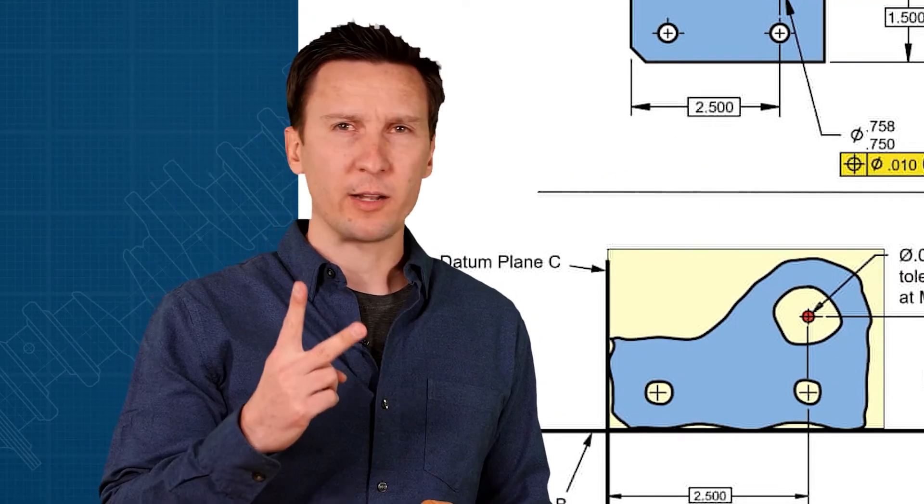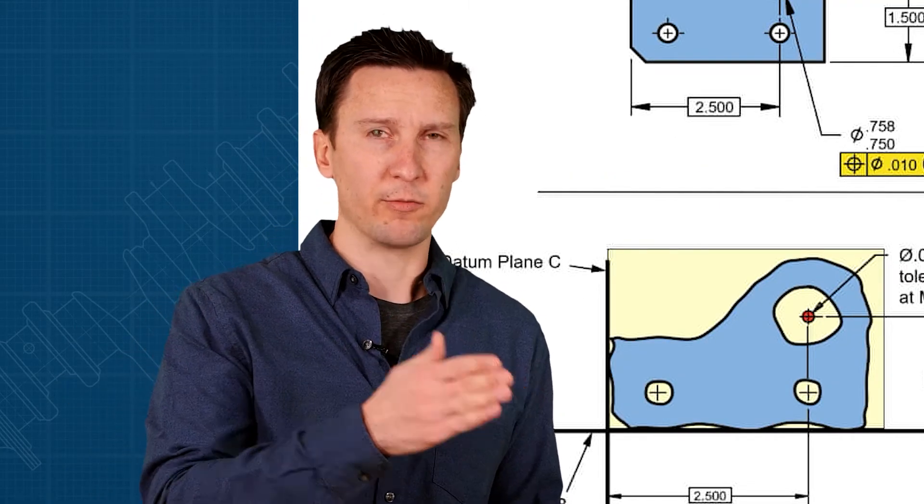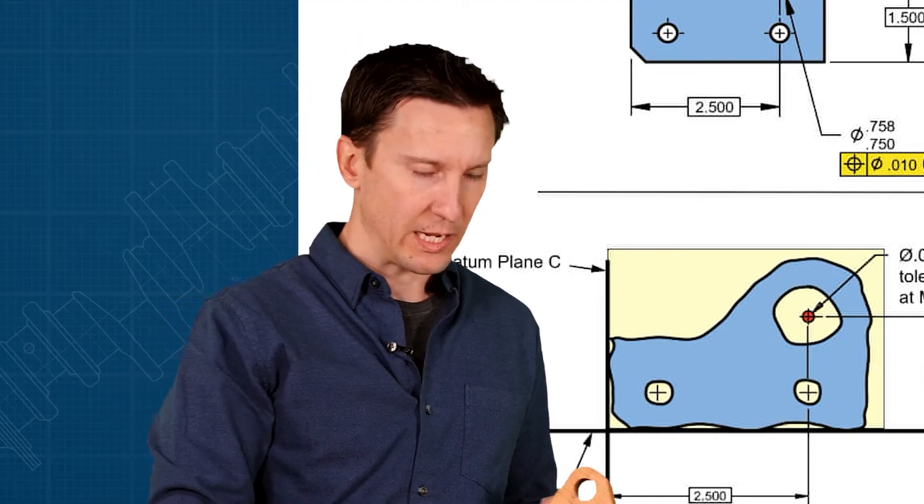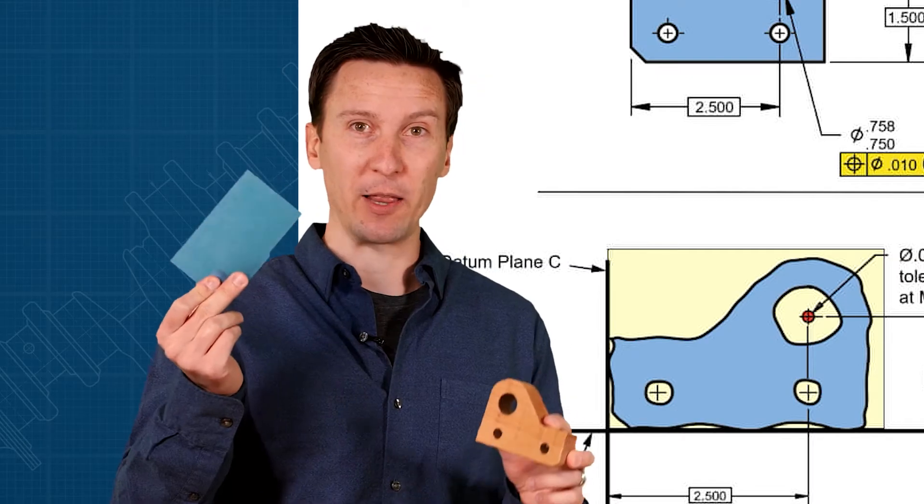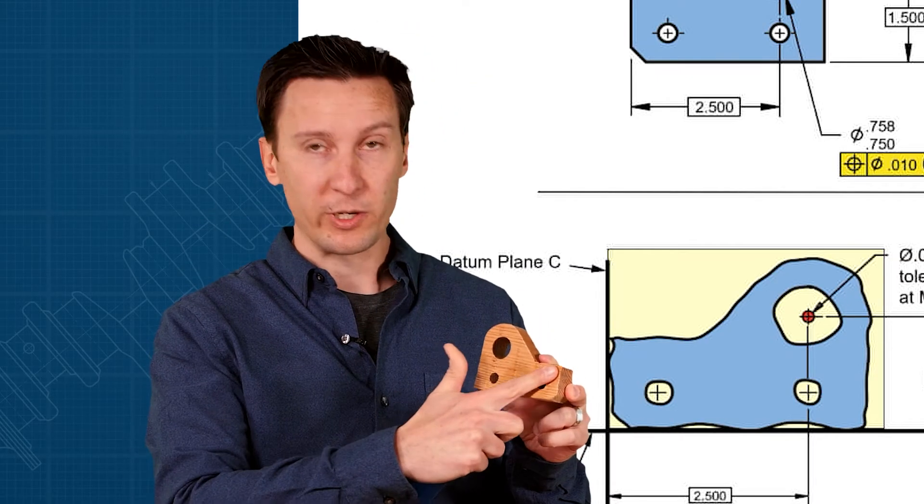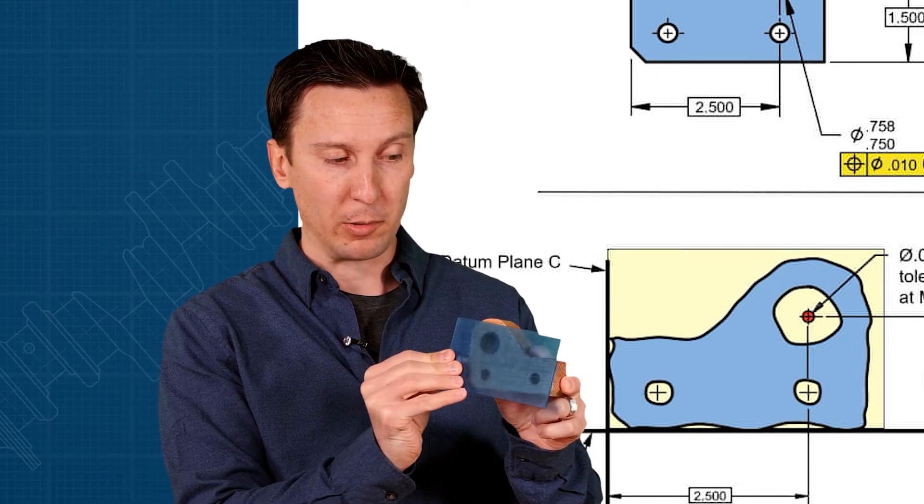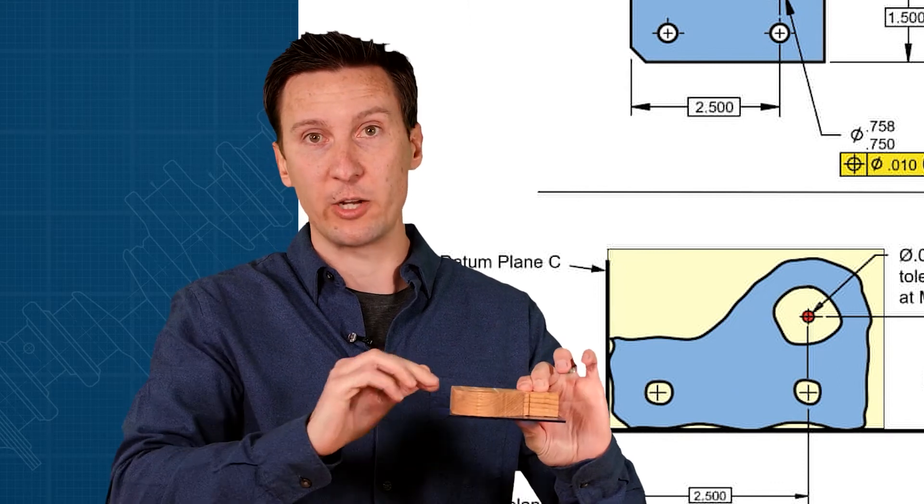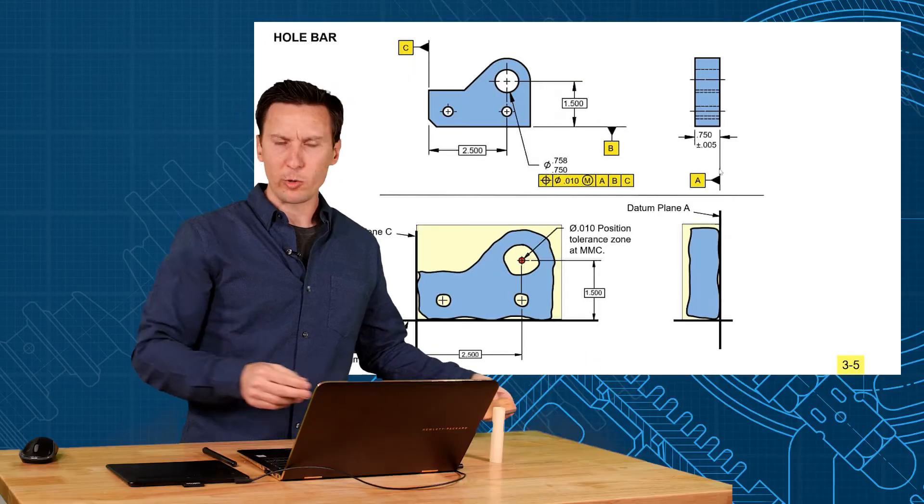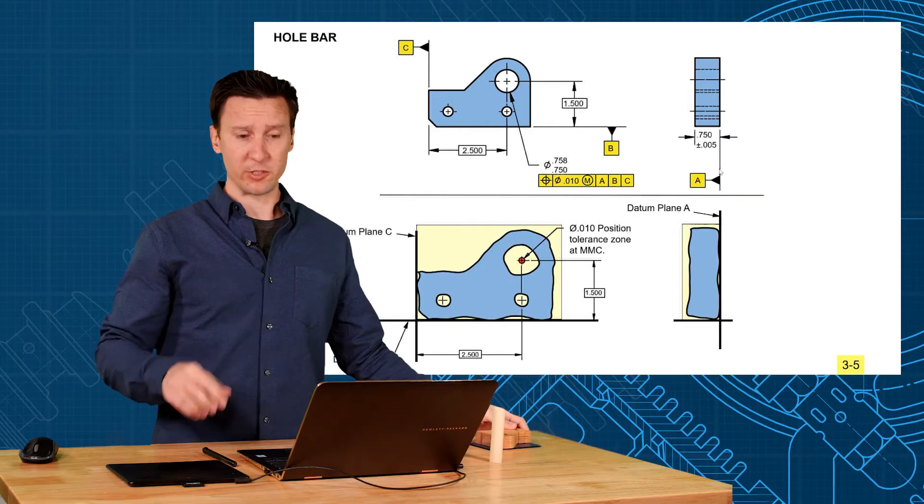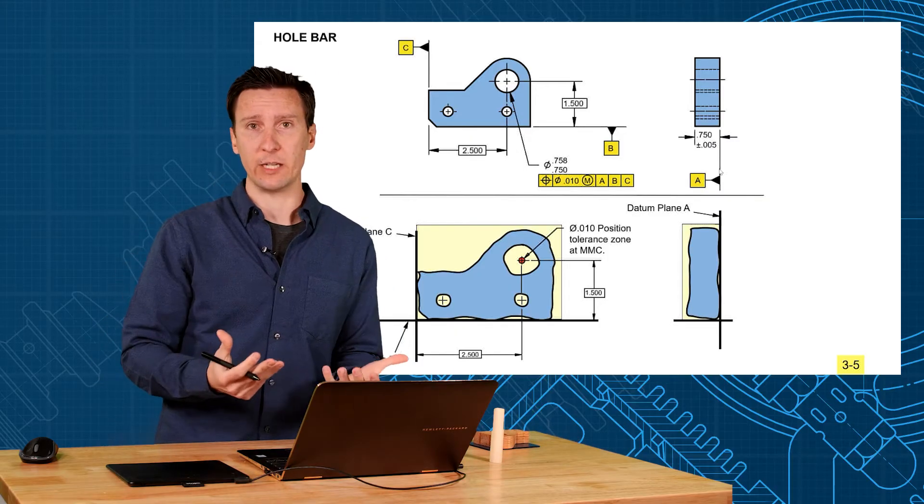I want to remind you of two concepts again, the term datum versus datum feature. Datum is a theoretically perfect plane. The datum feature is the real physical surface. So when I label this surface as a datum feature, in theory I'm going to bring a plane to the highest points and measure off of that. But we still don't know how rough and wavy that surface is, so that's why we want to qualify the datum feature.